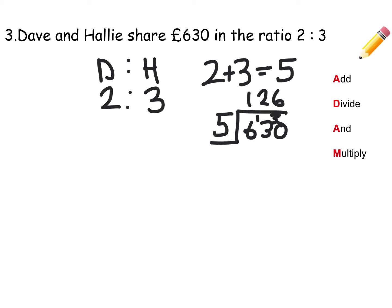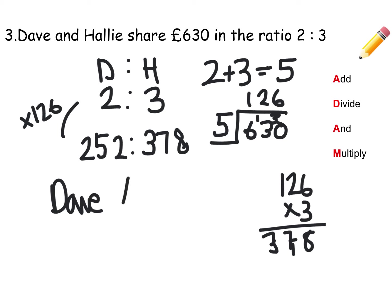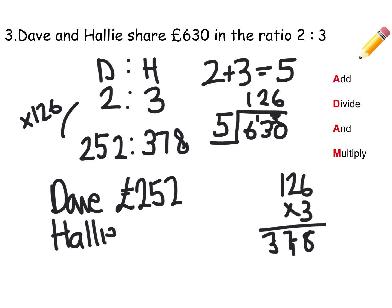When we multiply, we do 2 times 126, which is 252 pounds. You can do side calculations if you need to. Then 3 times 126: 3 times 6 is 18, 3 times 2 is 6 plus 1 is 7, and 3 times 1 is 3, giving 378 pounds. So to conclude: Dave gets £252 and Hallie gets £378. Added back together that gives 630.